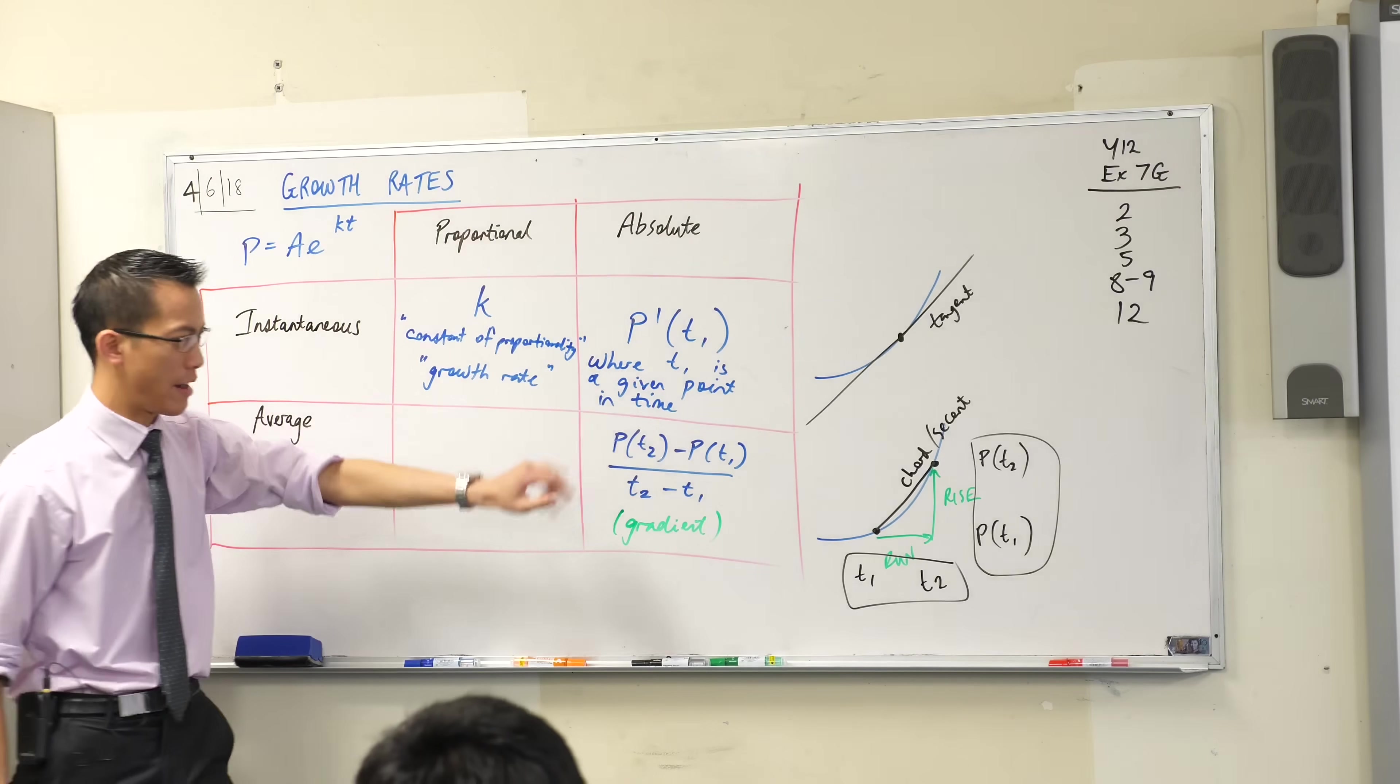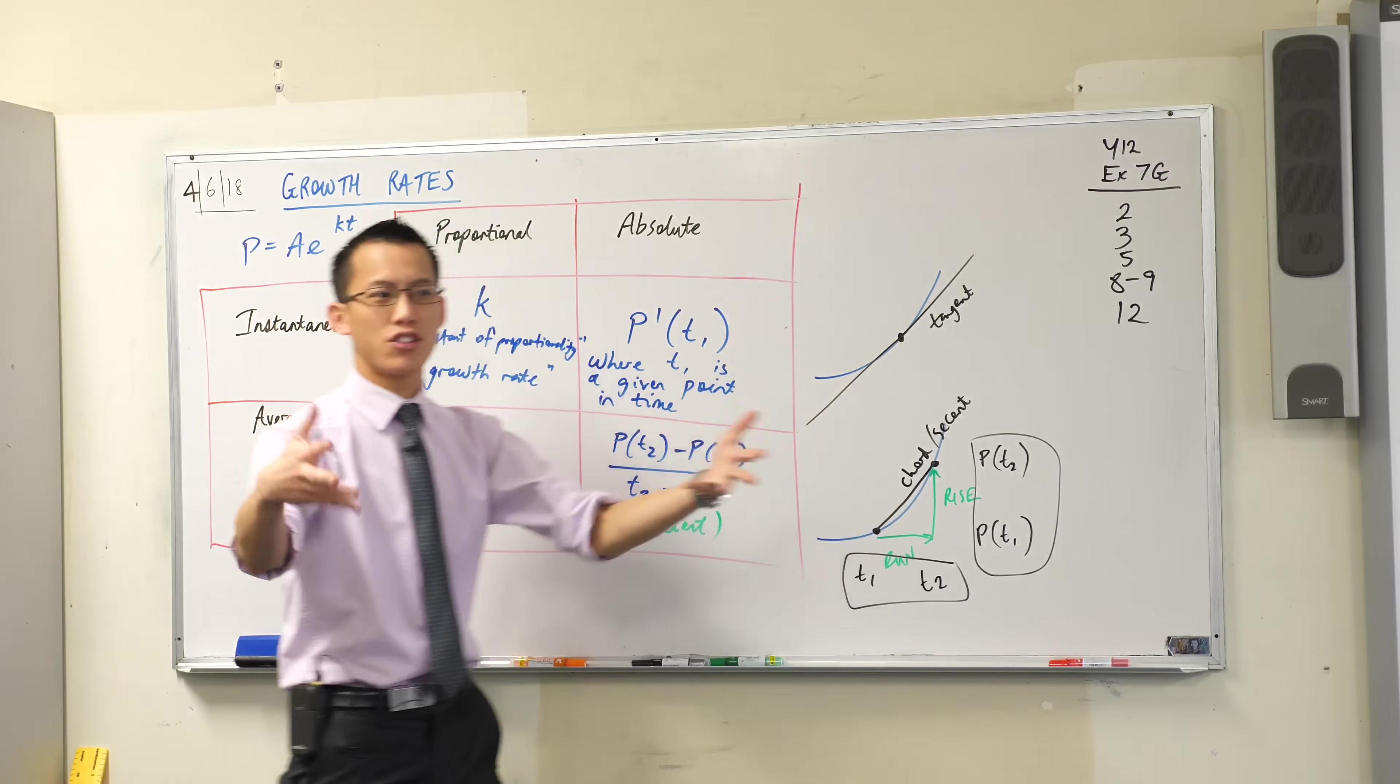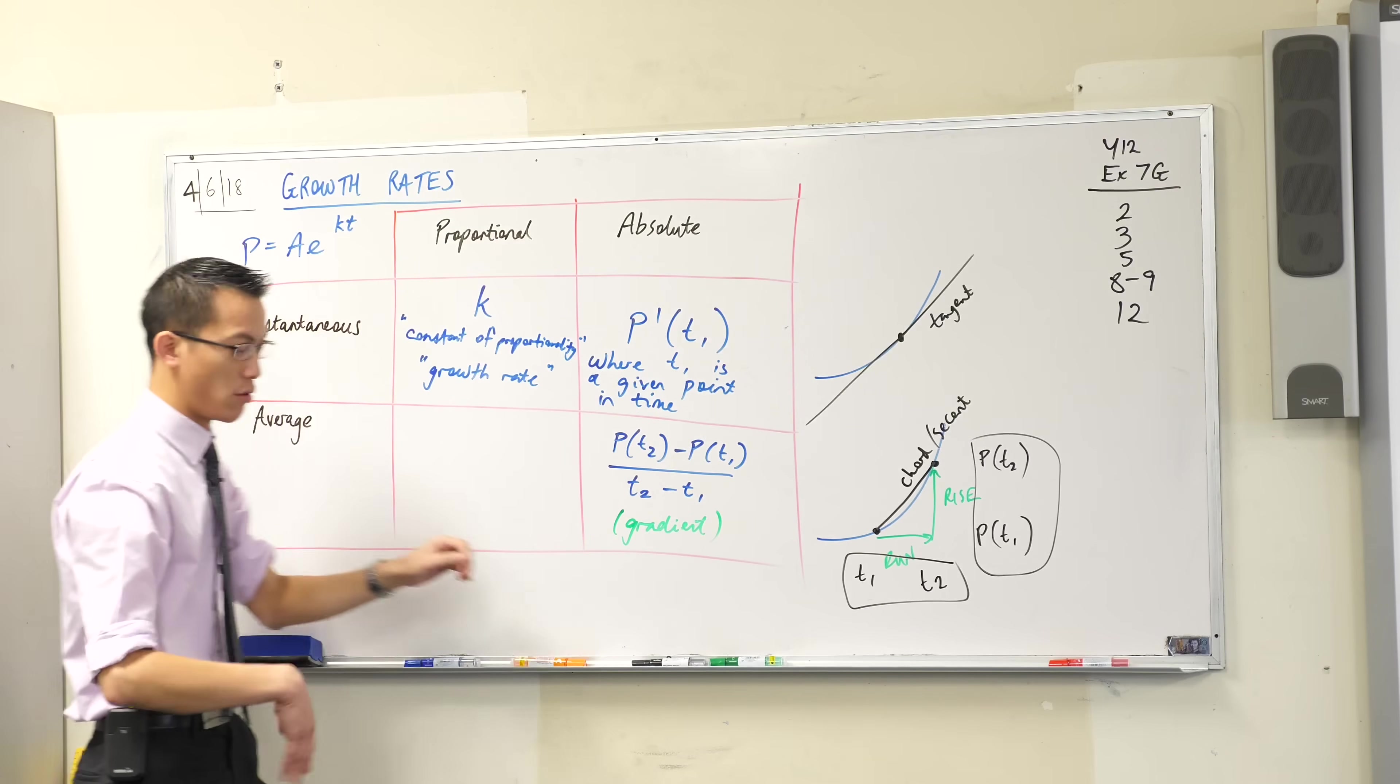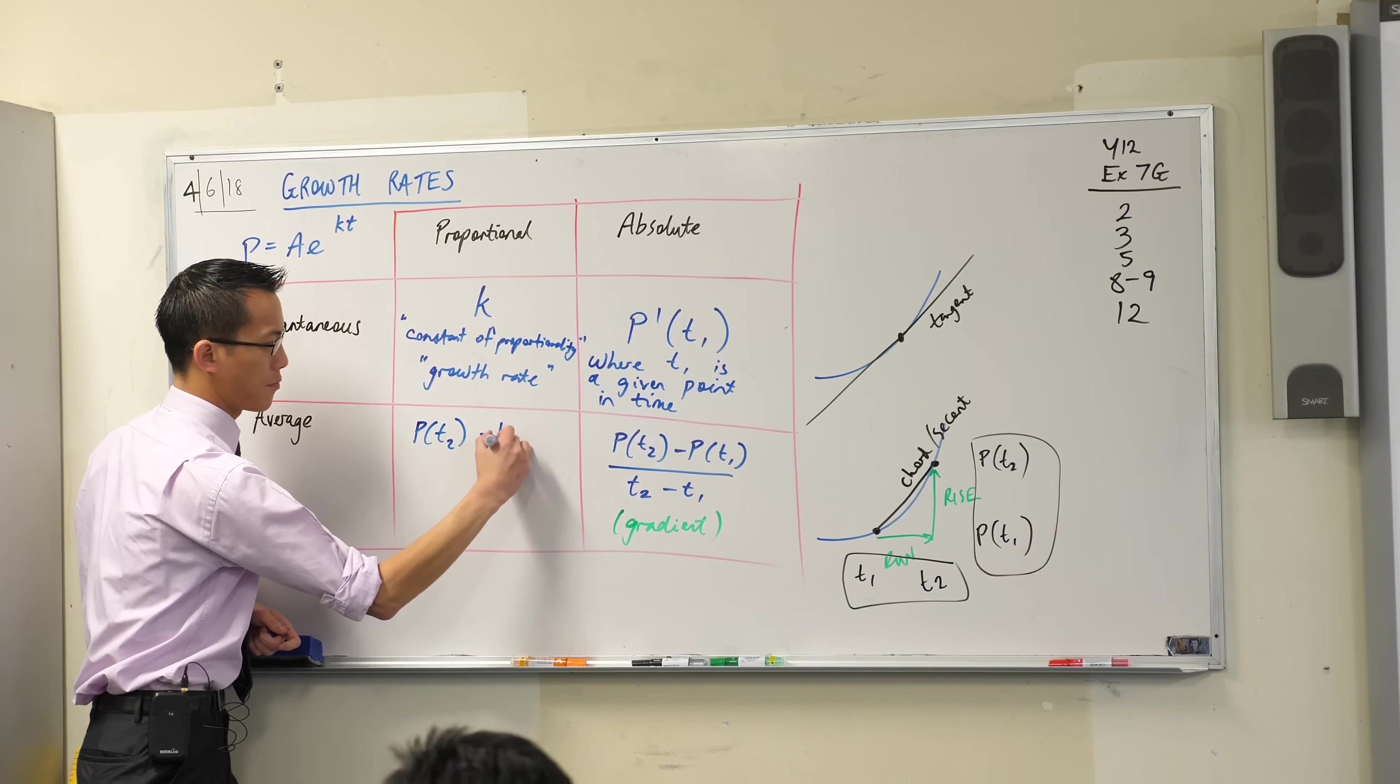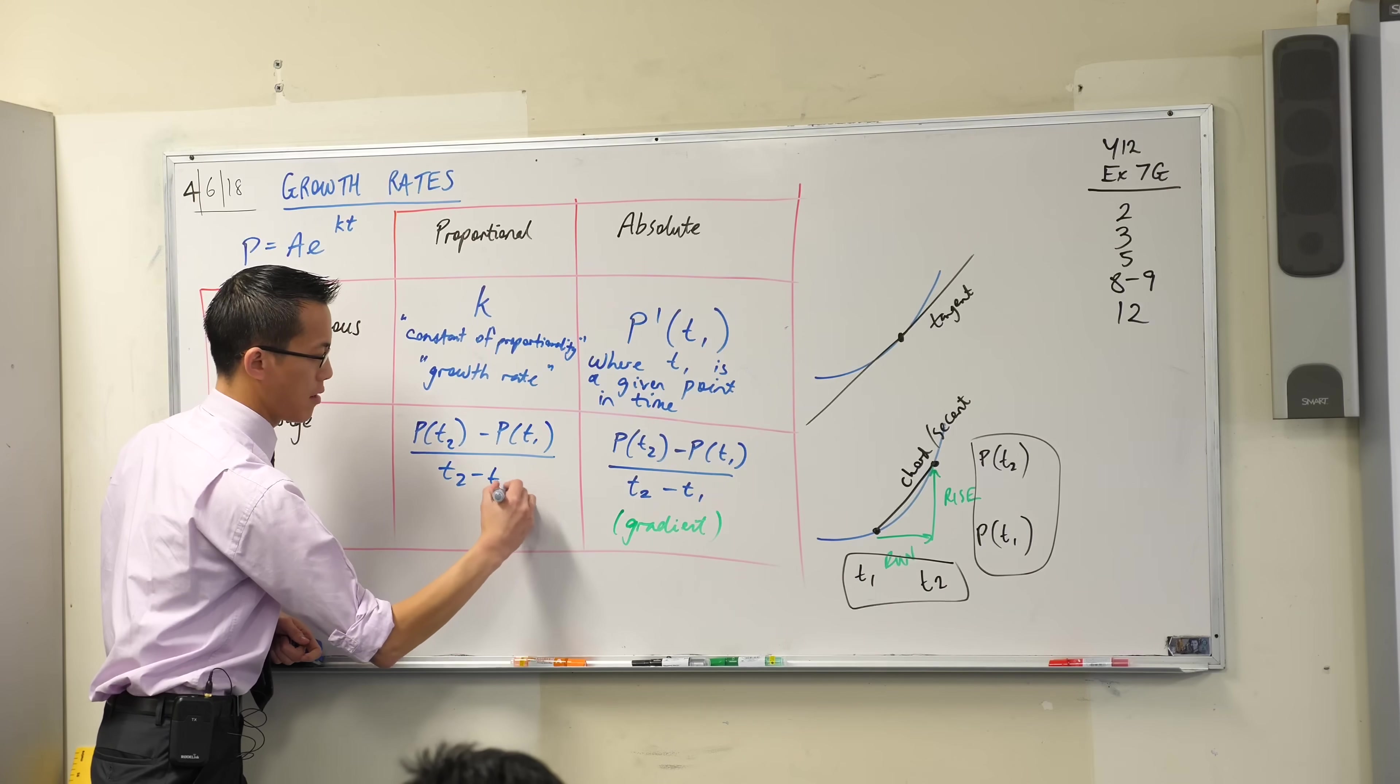Now, this would be an absolute growth rate. It's like, over that time, that gradient gave me 300 bacteria per hour. But if I want that in a proportional way, what if I have lots more bacteria or lots less? You're going to do all the same things. You're still going to work out this rate.